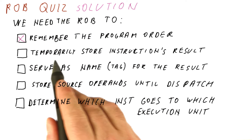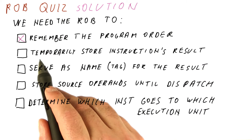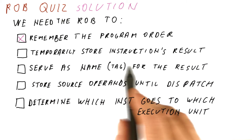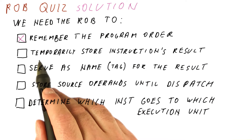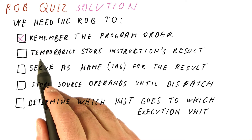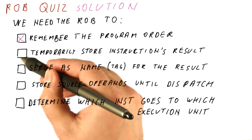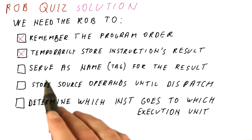To temporarily store the instruction's result — yes. The ROB holds the instruction's result between the time when it is produced, meaning when we are actually broadcasting it on the bus, and the time when the instruction's result is committed to the register file. So we definitely have that role for the ROB.